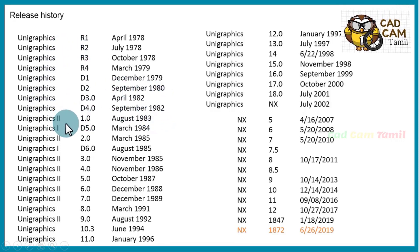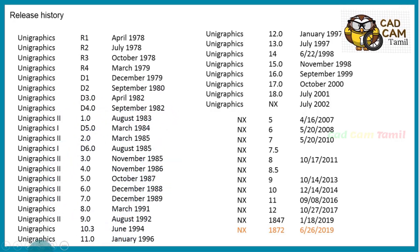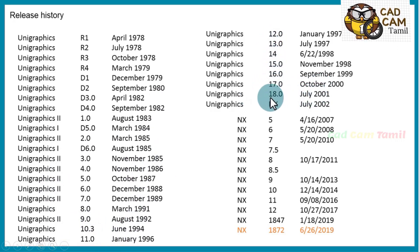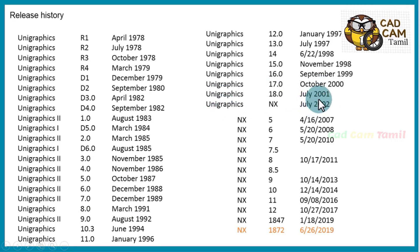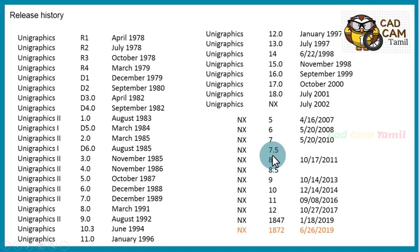Then came Unigraphics 2, version 1.0, then Unigraphics 11 and later version 17. Unigraphics 2.0, then 2.1 matched as NX 5, 6, and 7. Since 2007, when Siemens acquired the company, it became Unigraphics 3.0. Then NX 7, NX 10 were released in 2008, NX 7.5 in 2011, and NX 8 and 8.5 were also released.